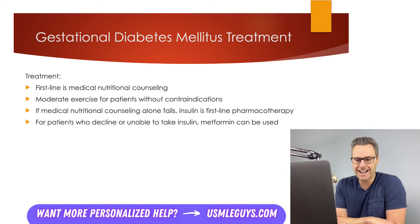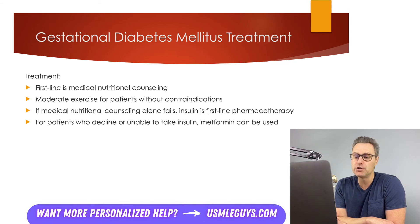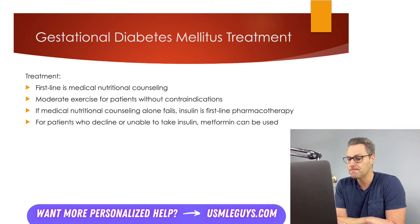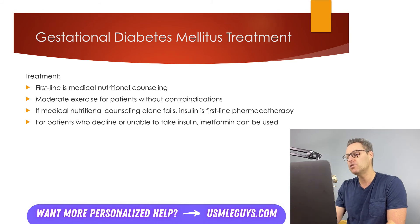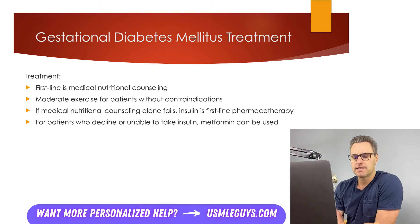In terms of treatment for gestational diabetes, the first line is medical nutritional counseling, with up to 85% of patients able to hit their target glucose with lifestyle modifications alone — which is ideal since we want to avoid medications during pregnancy. Moderate exercise should be encouraged for patients without contraindications. If medical nutritional counseling alone fails, insulin is the first-line pharmacotherapy, with dosages adjusted to meet monitoring targets. If patients are non-compliant or refuse insulin, metformin can be used in its place.